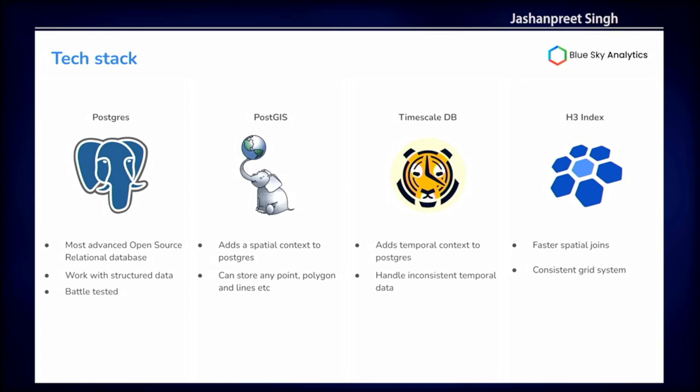PostGIS can store all types of geometries — points, polygons, and more. And then TimescaleDB is something that we've added as an extension, which handles the temporal part of the database. TimescaleDB is also open source; you can add it onto your Postgres — it just installs as an extension, very similar to PostGIS.